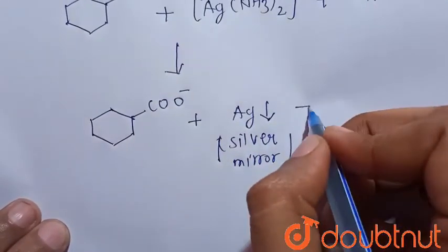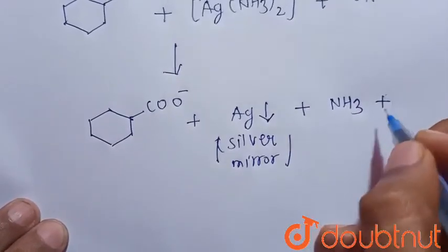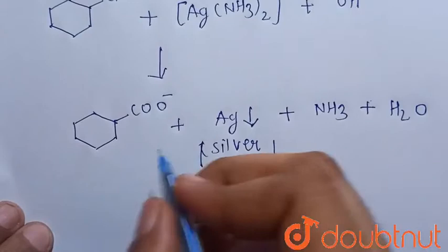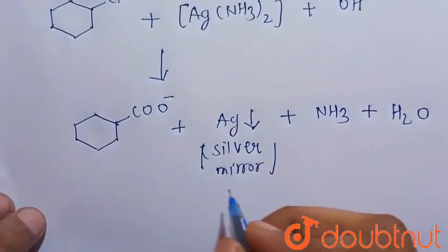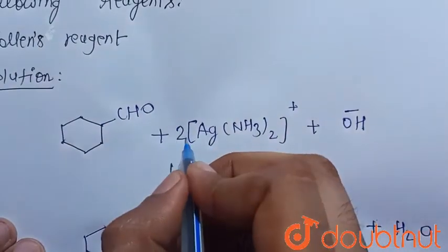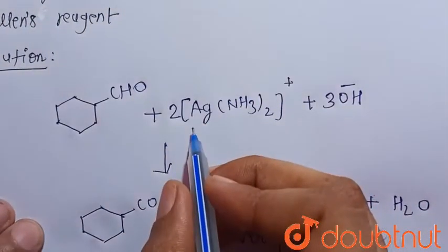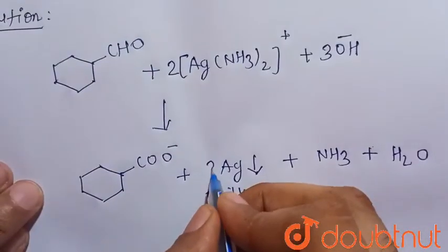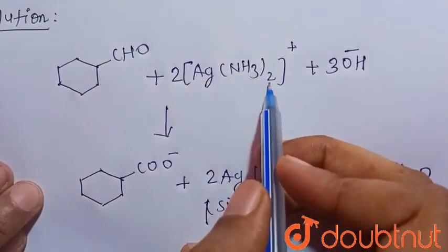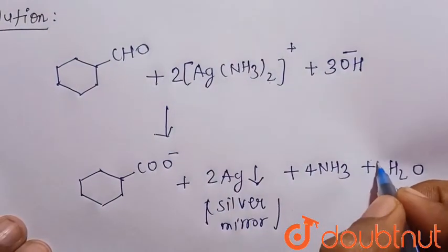And some side products are also formed, that is ammonia and water. Now we have to balance the given equation. So there will be two, there should be three - since here two silver atoms, so there should be also two. And here ammonia, two into two is four, so there should be four. And here should be two.